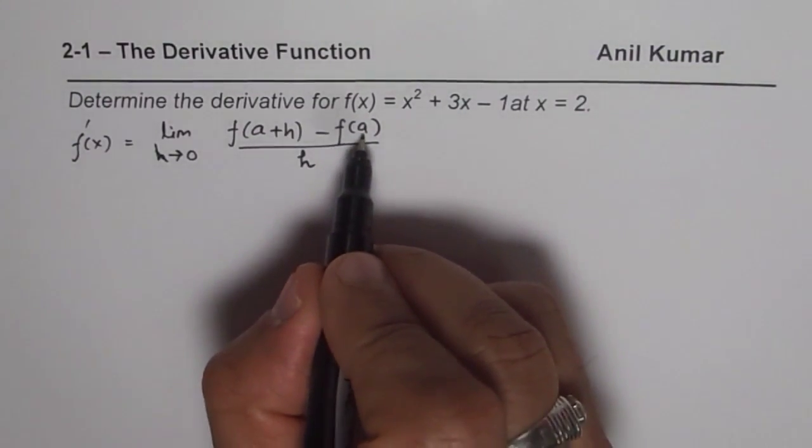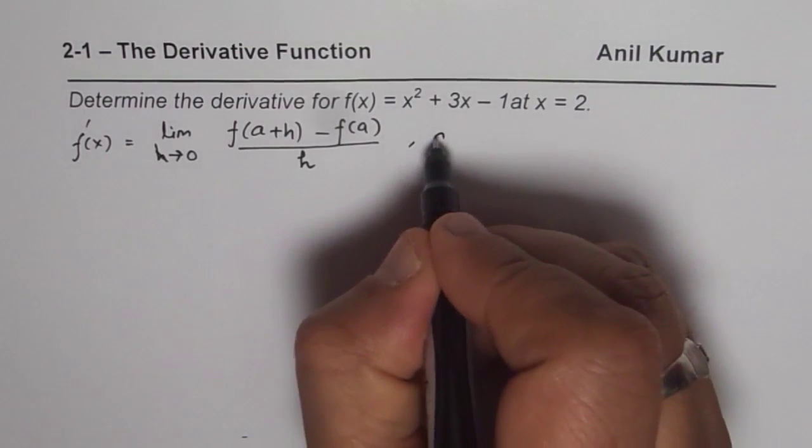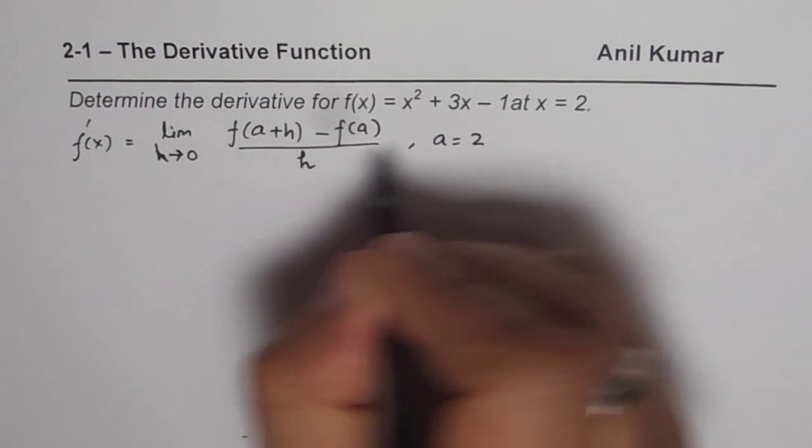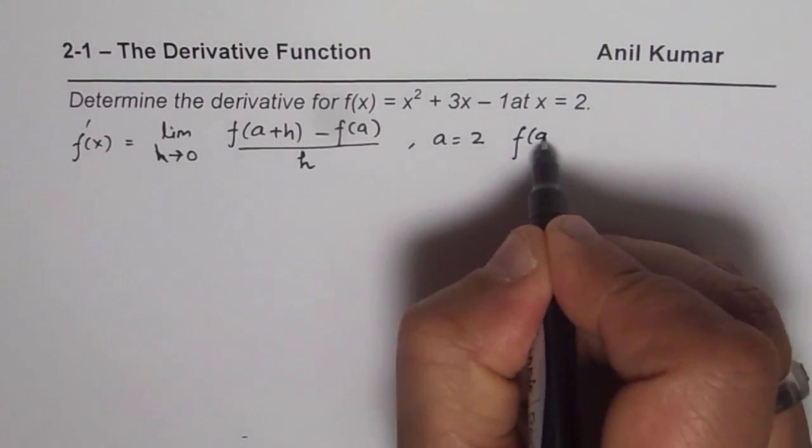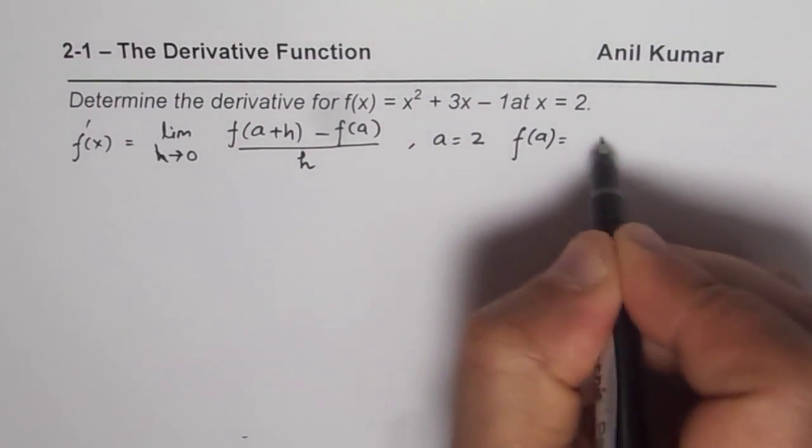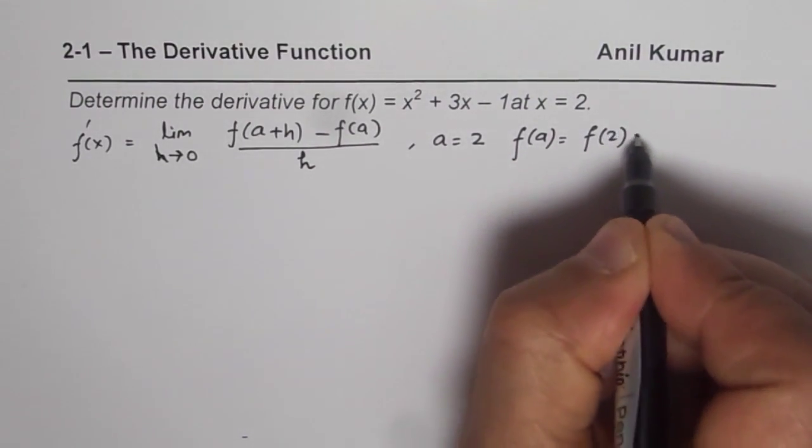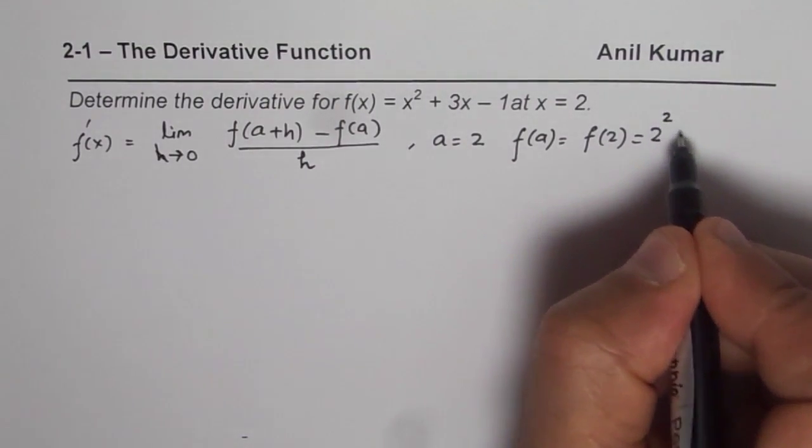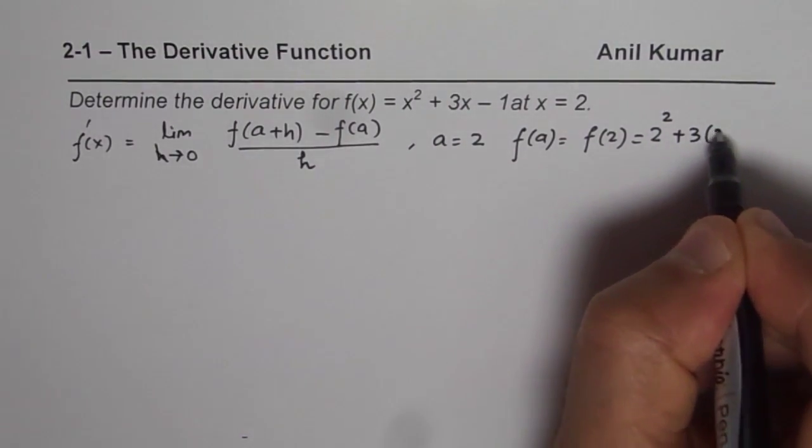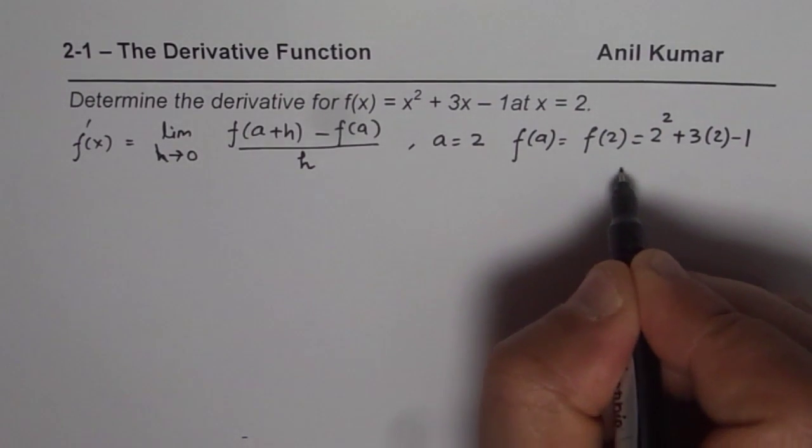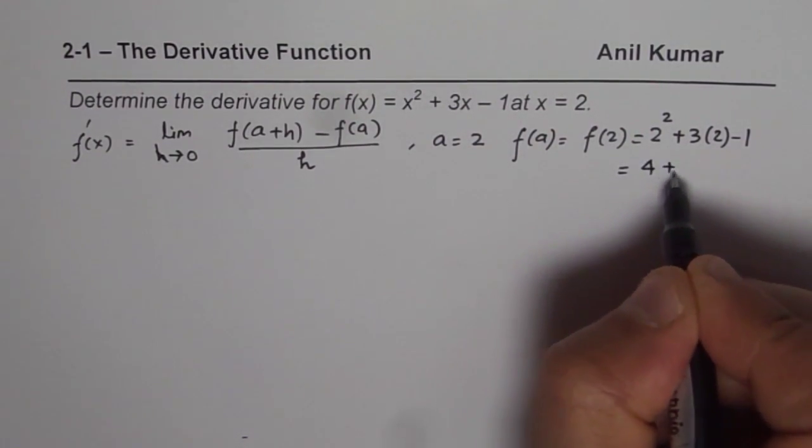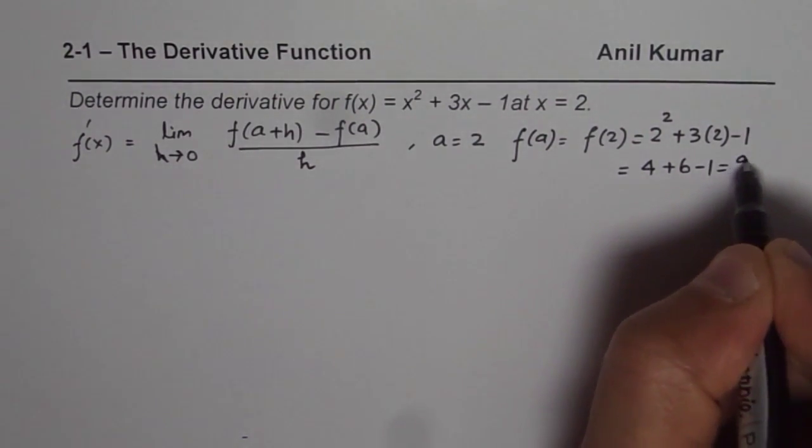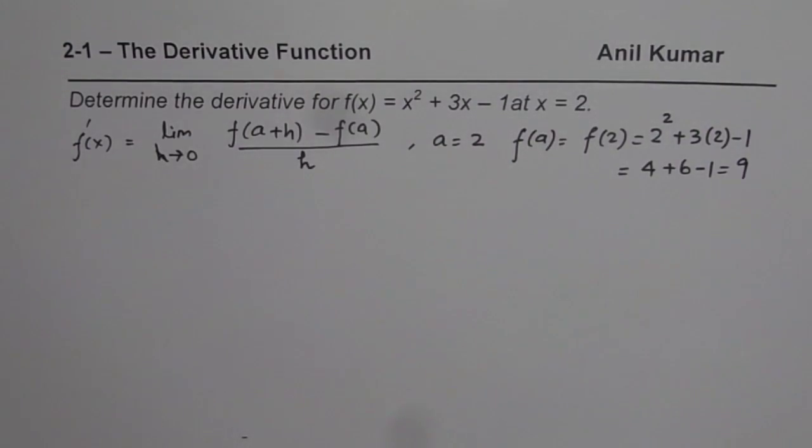Now let us find what is f of a. For us, a is equal to 2. So f of a is, f of a means f of 2, right? So f of 2 is equal to, we will substitute 2 here, so we get 2 squared plus 3 times 2 minus 1 and that is 4 plus 6 minus 1, that is 9. So f of 2 is 9 for us.